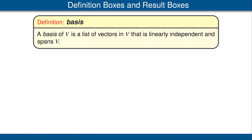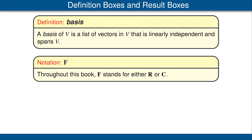Throughout these videos and throughout the book, you will find definitions, notations, and results in color-coded boxes. In these videos, definitions appear in yellow boxes, as in this example from Chapter 2. The word or phrase being defined appears on the first line, as can be seen with the word 'basis' here. Notation that is being defined also appears in yellow boxes, as in this example from Chapter 1. The notation being defined will appear in the first line, as can be seen here with F.